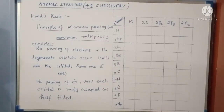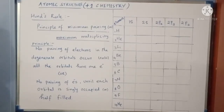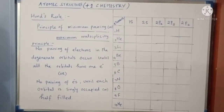For example, when you take the P orbital, the fourth electron is the one that gets paired with the first electron. The first electron goes to Px, the second electron goes to Py, and the third electron goes to Pz. Only the fourth electron gets paired with the first Px orbital.